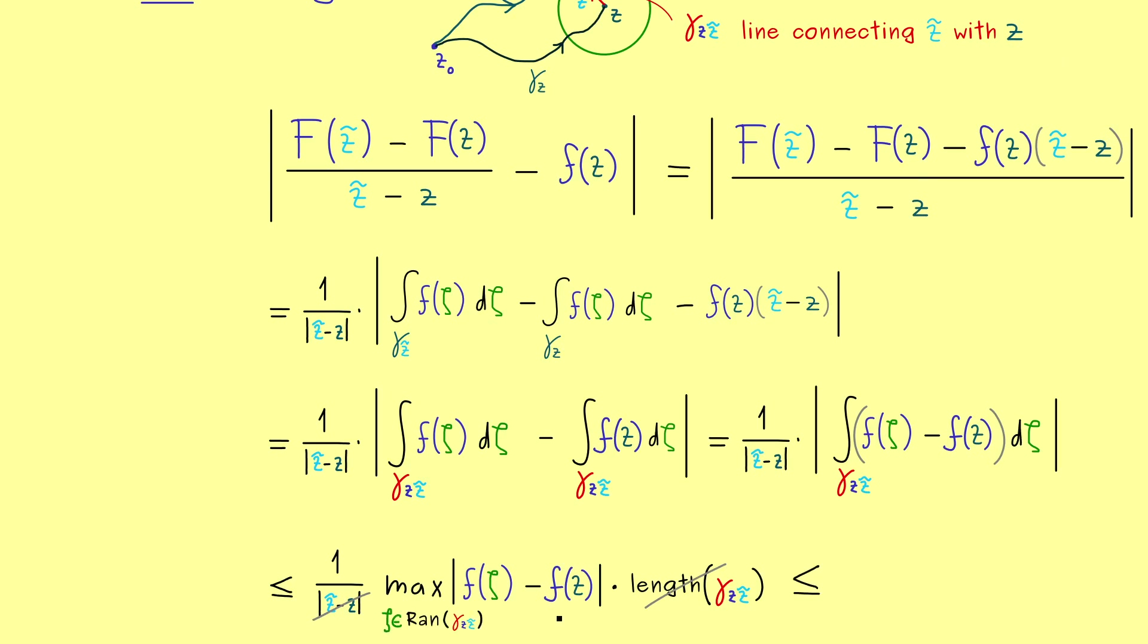On the other hand, for the maximum instead of focusing on the line segment, we can also estimate it with the maximum in the epsilon ball. In some sense, it's just shorter to write down. So, at this point I don't have to say so much, because we know we have a holomorphic function, so a continuous function. Which means, if epsilon gets smaller and smaller, this maximum gets also smaller and smaller.